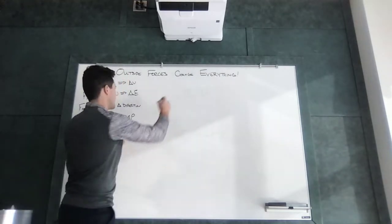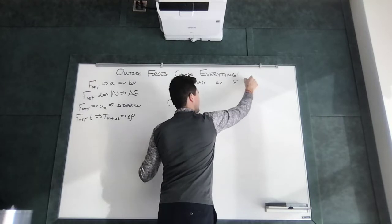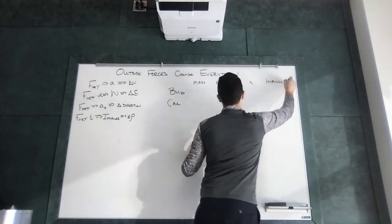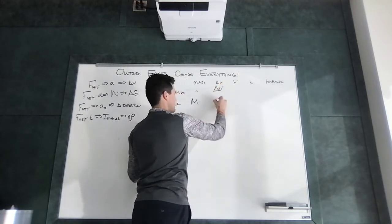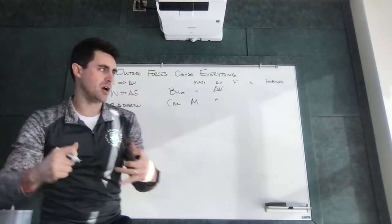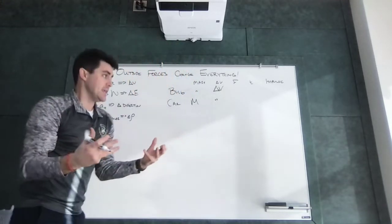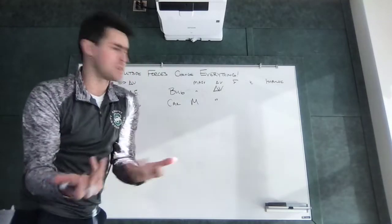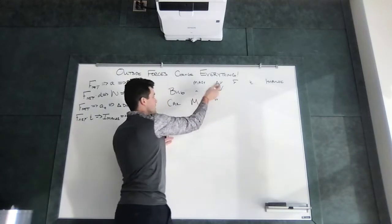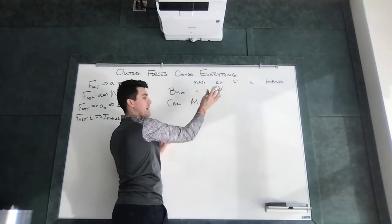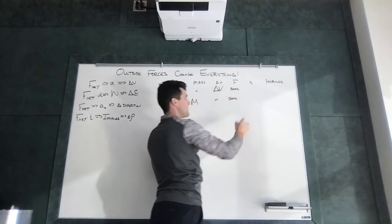Changes in momentum look different for the bug versus the car. The bug has a very small mass and the car has a very large mass. They experience the same force — Newton's third law. The bug experiences a much larger change in velocity, while the car experiences a much smaller change in velocity. If a bug hit our windshield and caused a major change in the car's speed, that bug might be a pterodactyl. We simply don't notice it because of how massive the car is.